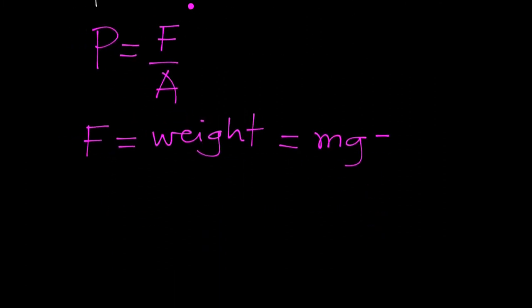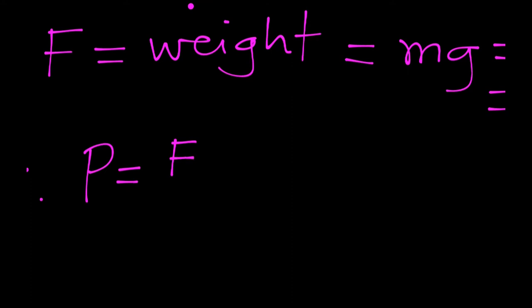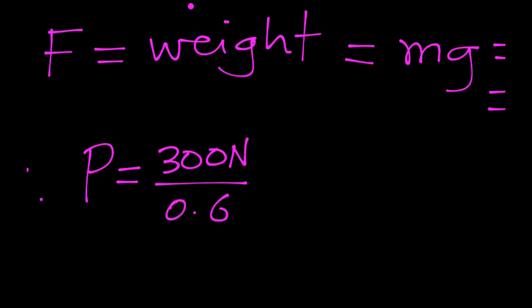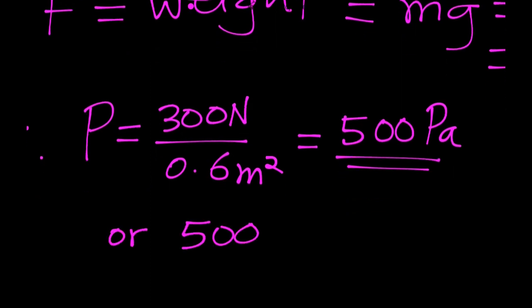So force = 30 × 10 = 300 newtons. Therefore, pressure = force / area = 300 / 0.6 = 500 pascals. You can also write 500 newtons per square meter — both are correct. That is how you handle a pressure calculation question and get your marks.